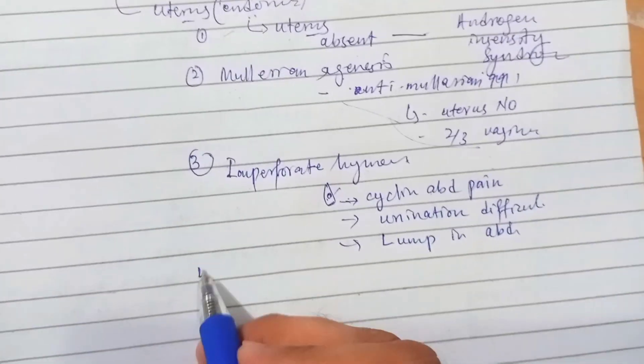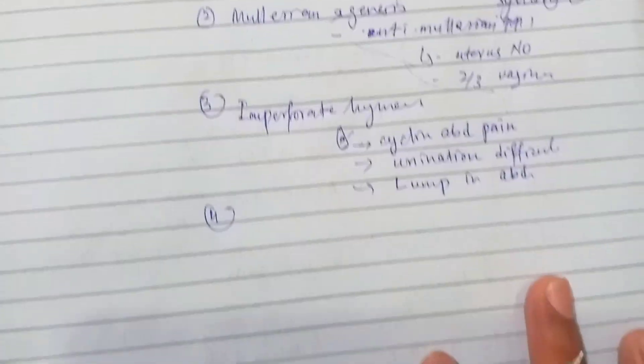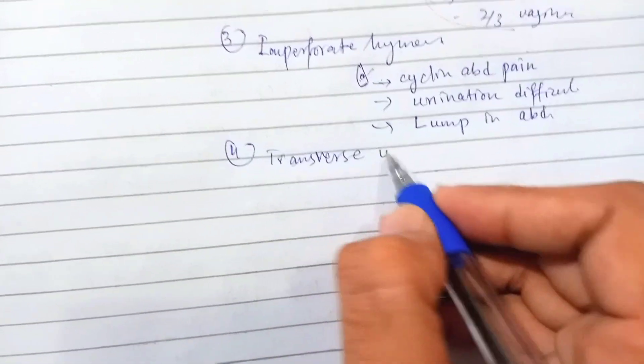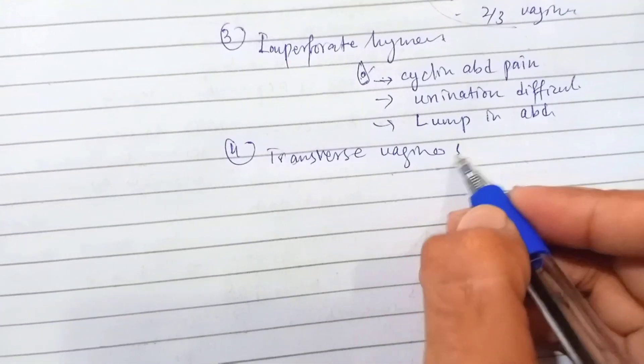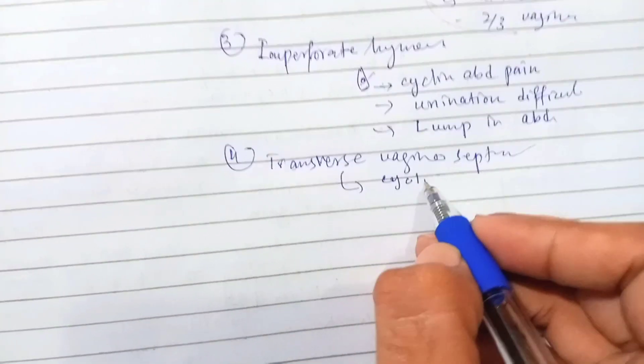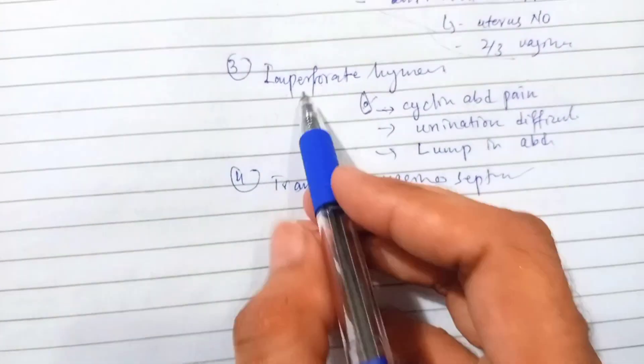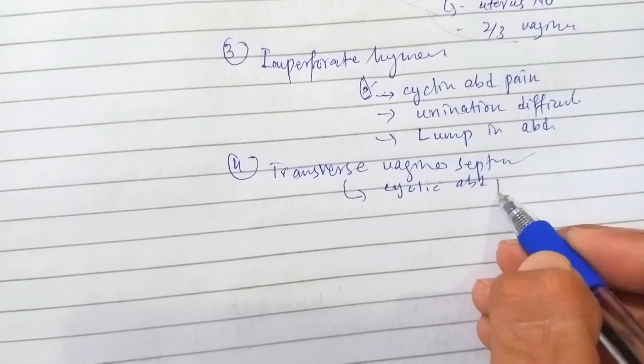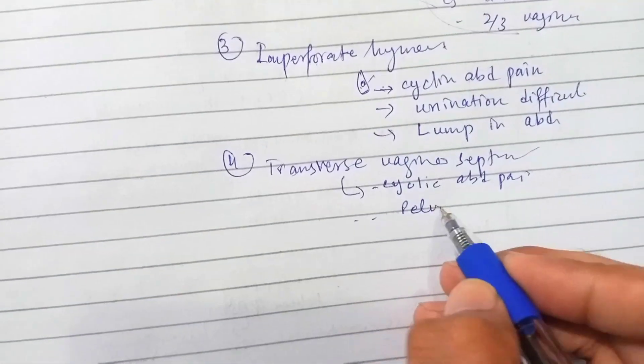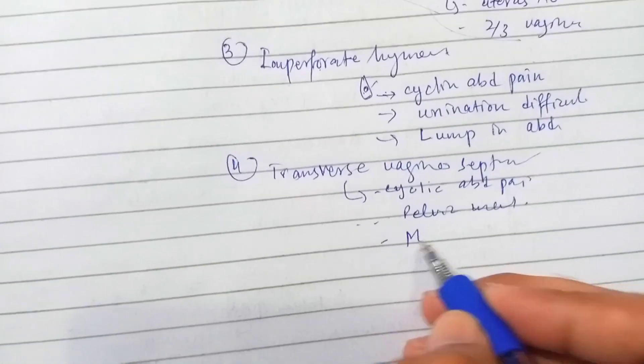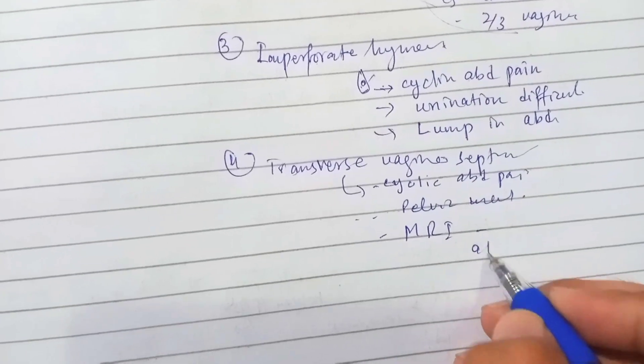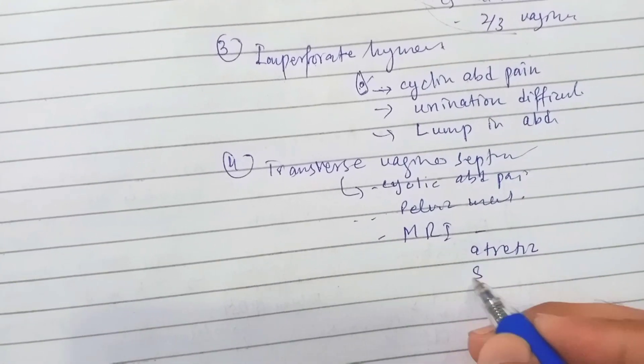So number four is transverse vaginal septum. In this case there is cyclic abdominal pain, same as in imperforate hymen, cyclic abdominal pain and pelvic mass. And on MRI we see that there is clearly defined length of the obstructive segmentation.